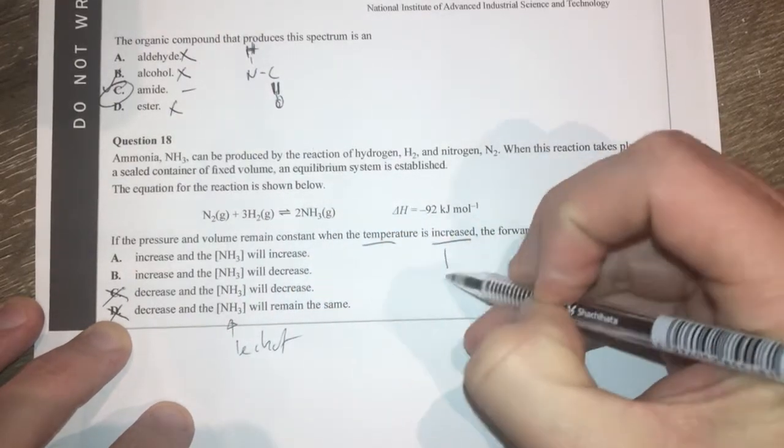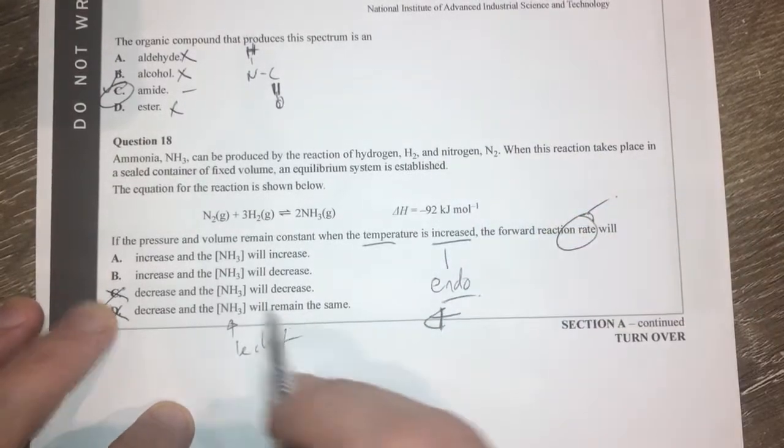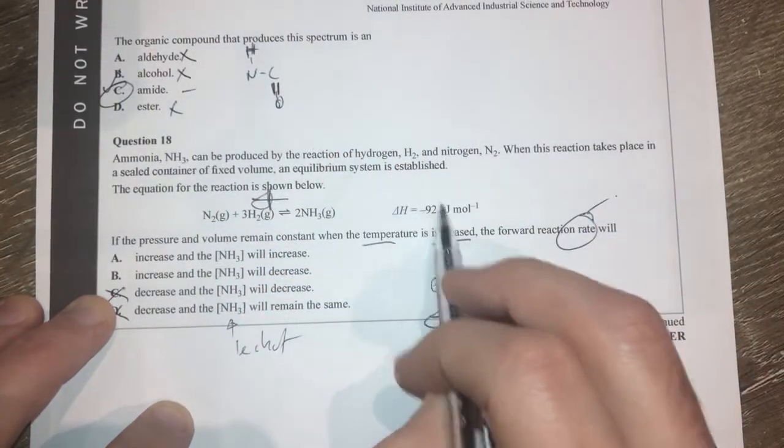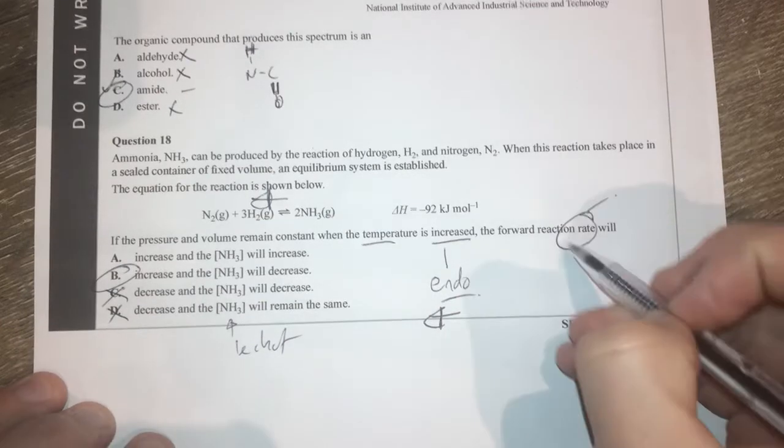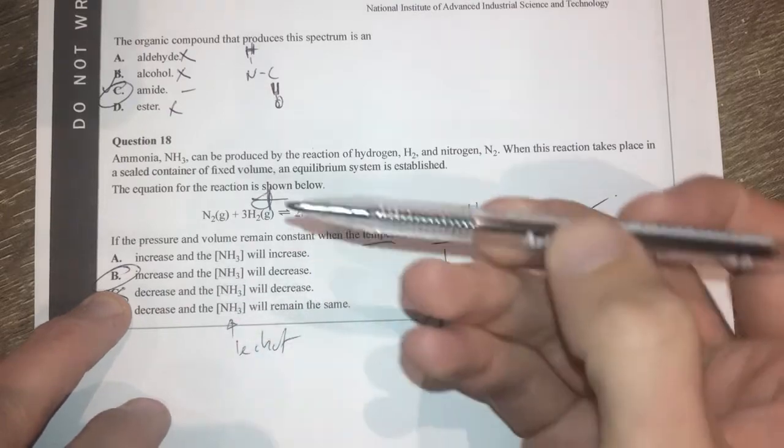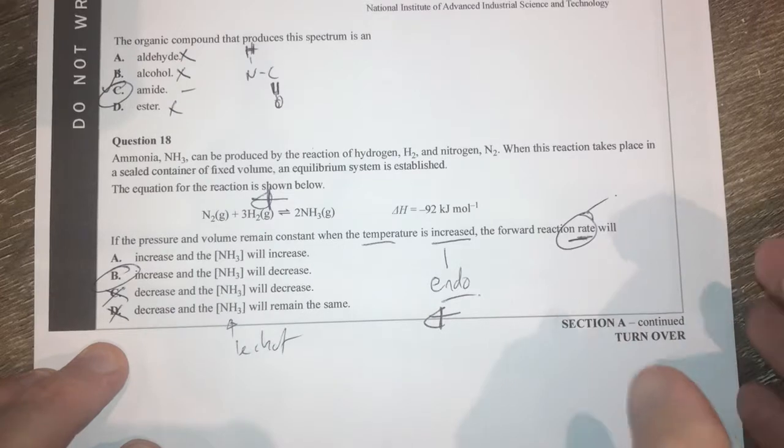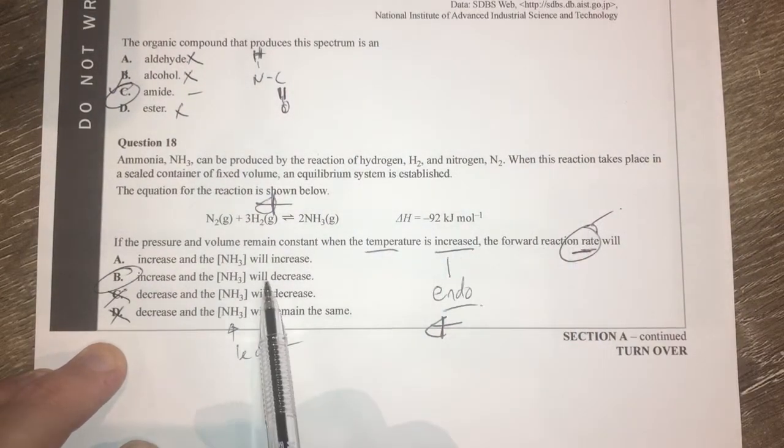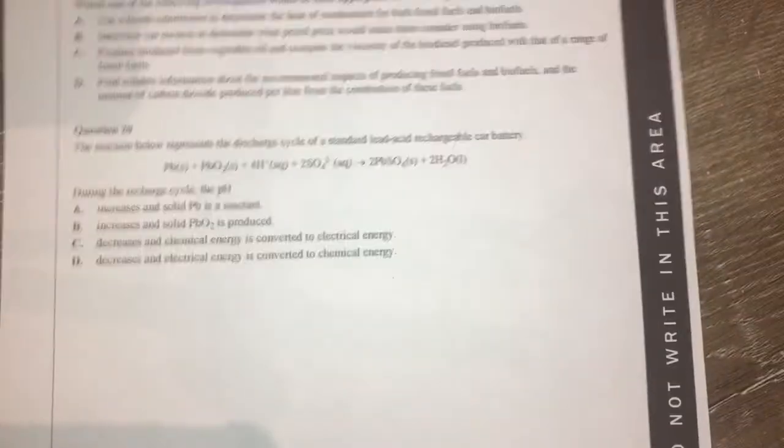And if you increase temperature you're favouring your endothermic which in this case is the backwards reaction. So therefore concentration will decrease because we're going backwards because it's an exothermic reaction. So therefore it's going to be B. This one talks about rate of reaction. The rate increases but the backwards reaction is favoured. One of those ones that can be tricky here and there but definitely increase rate of reaction because it's increasing temperature and decreasing your concentration because we're favouring the backwards reaction.